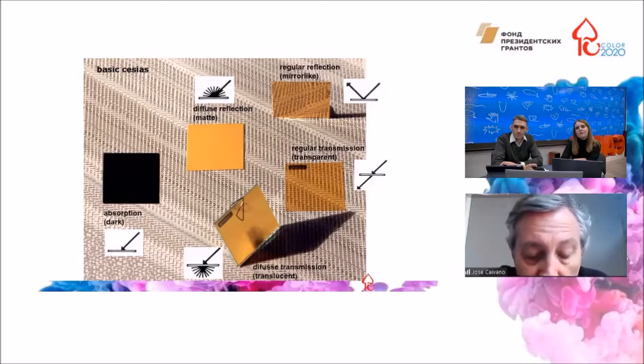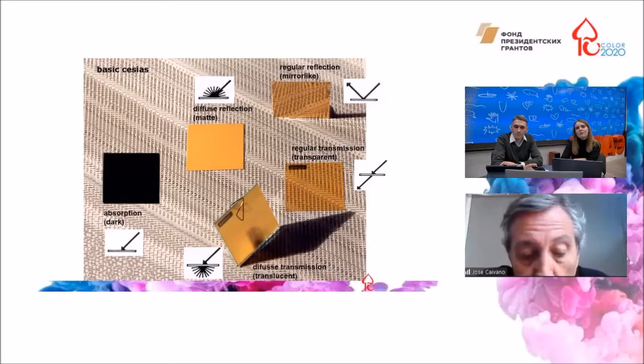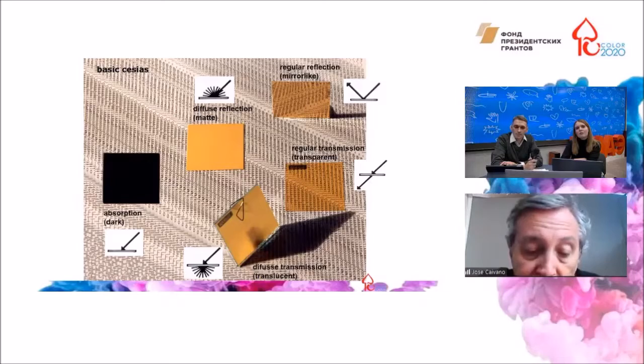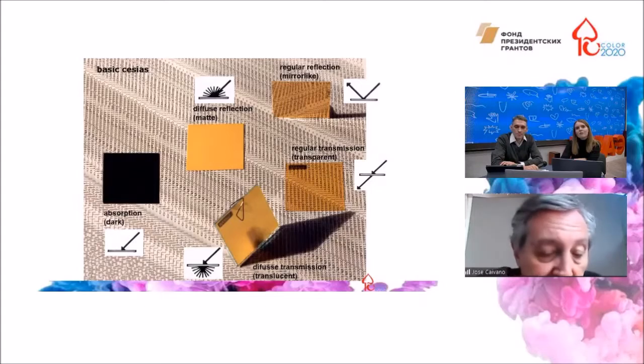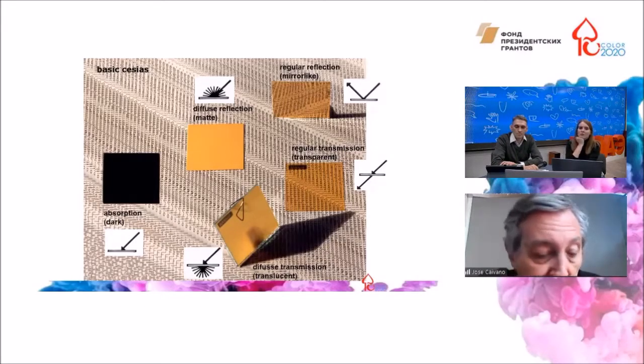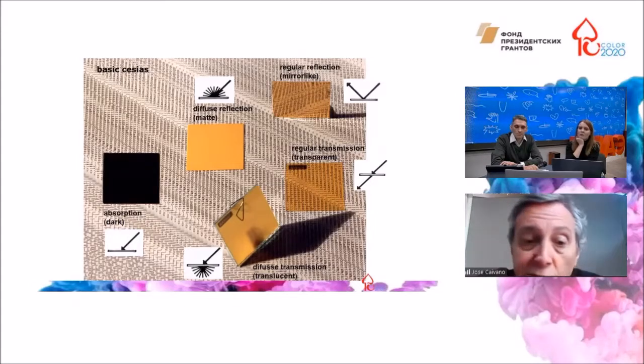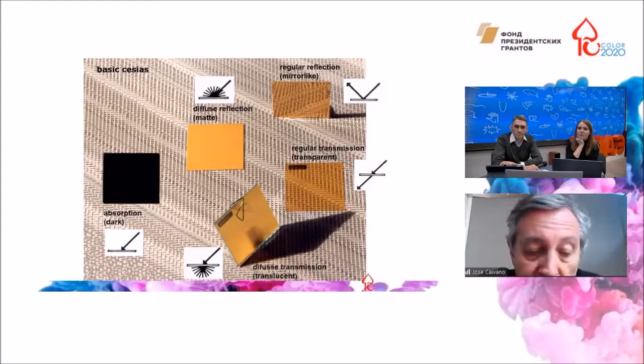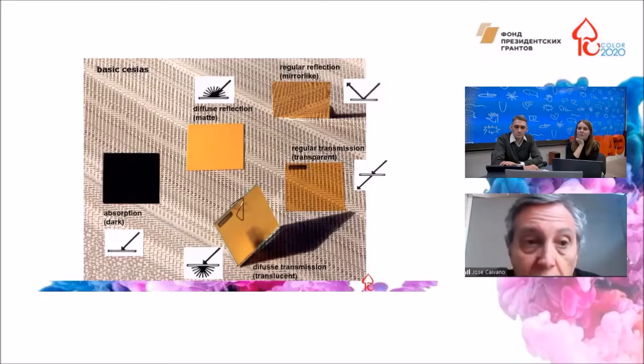A diffuse light reflection of an opaque object normally produces a matte appearance. A regular or specular reflection generates a mirror-like appearance. A regular transmission of light is normally seen as transparency, while a diffuse transmission of light is seen as translucency. Finally, if an object absorbs almost all the light that it receives, it will be seen dark or black.